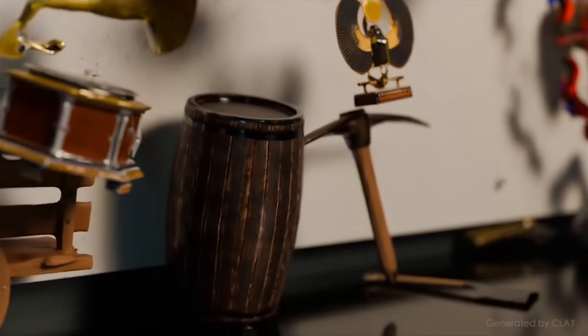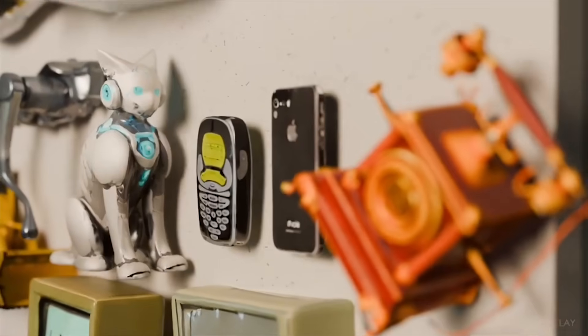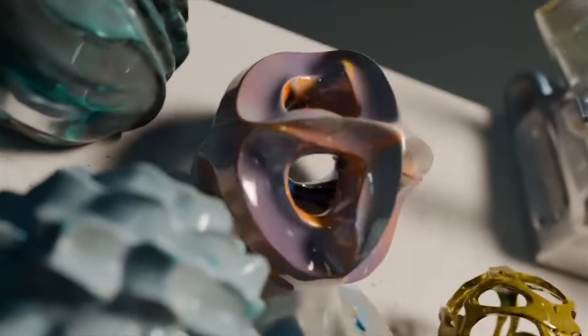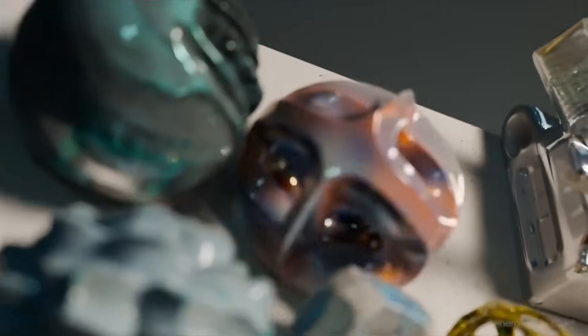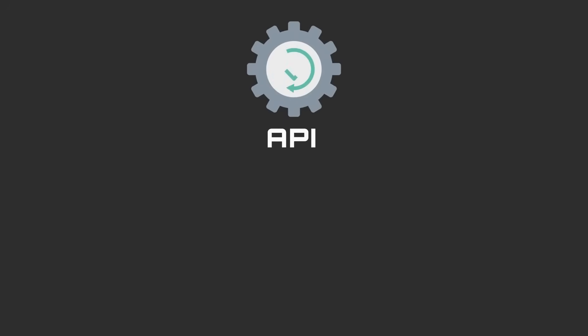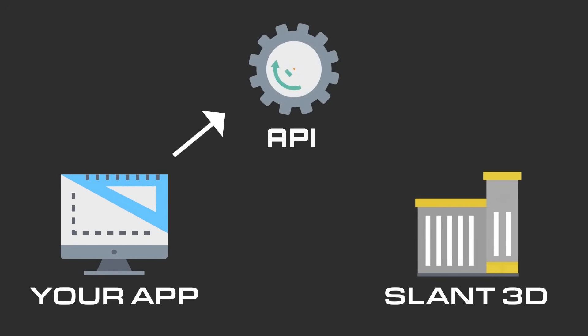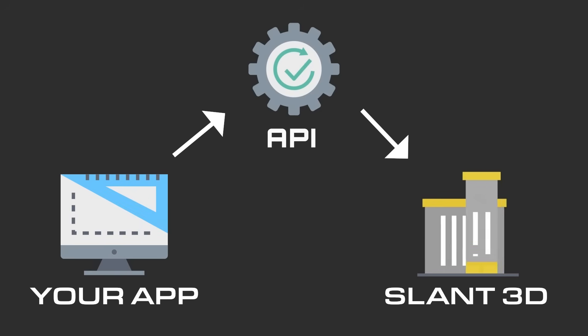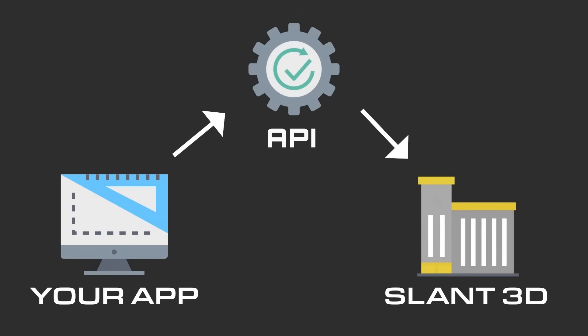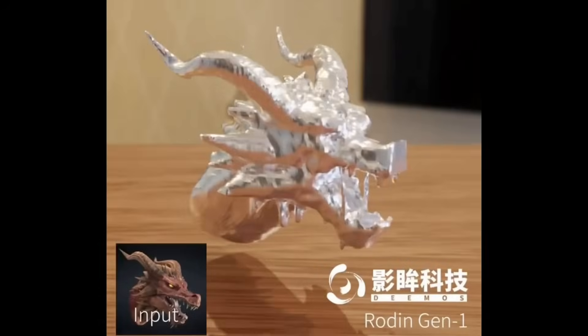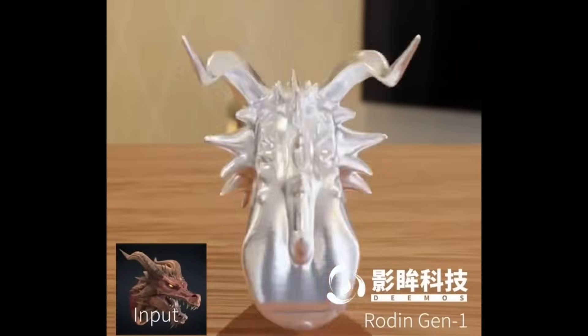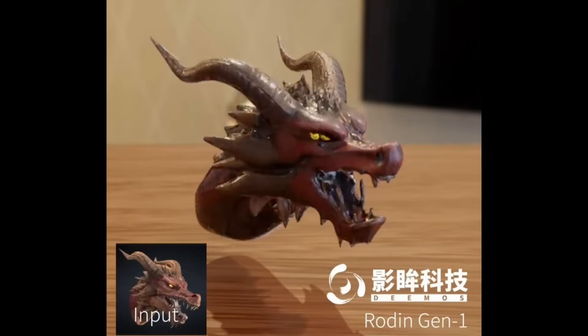There are so many parts to be made that there are not enough designers in the world to produce them at the scale that people will want. With things like our 3D printing API, anybody in the world can now get access to a 3D printer and have real products delivered. So the demand for new 3D models is only going to continue to increase, and AI is almost necessary in order to solve this problem.